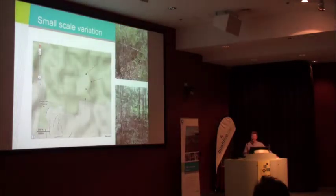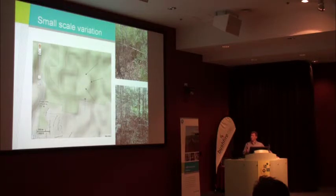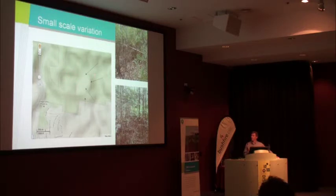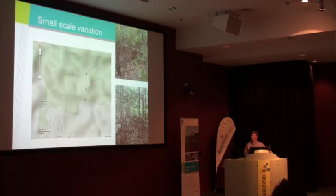There's also small scale variation. These are some measurements we've been making at Winmalee in the Blue Mountains, where we've been looking at variation on the scale of hundreds of metres. There's a small hill with Sydney coastal dry sclerophyll forest, and a wet sclerophyll forest down in a drainage line. We've had four sites: one on the ridge top, one on the north and south slopes, and one in the gully. We've been visiting weekly over the previous few months looking at differences in moisture content.